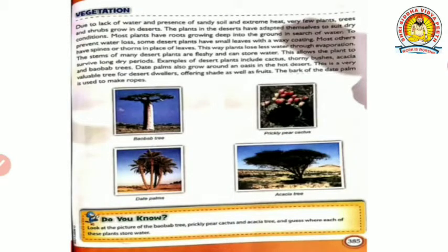Now, vegetation. Due to lack of water, presence of sandy soil and extreme heat, very few plants, trees and shrubs grow in deserts. Desert plants have a thorny structure because there is not much water available, so they store what little water is present - that is why they have thorns and spikes. The plants in the deserts have adapted themselves to suit dry conditions. That thorny structure is their adaptation so that they can survive.